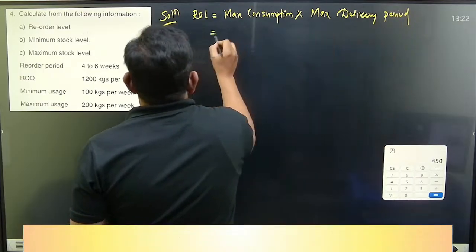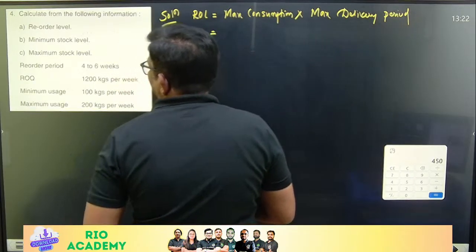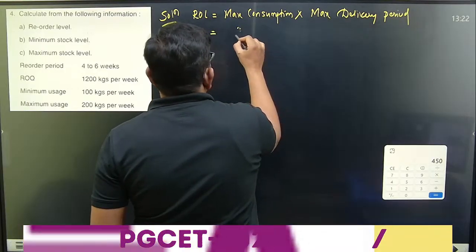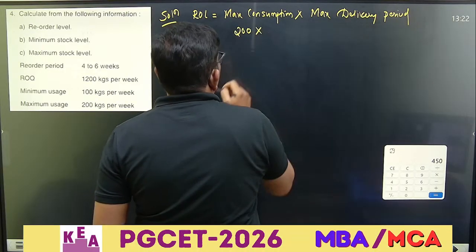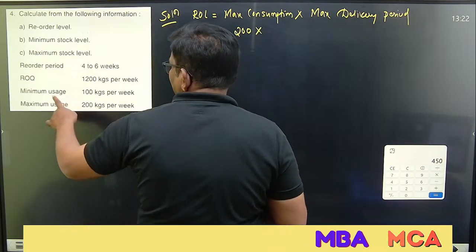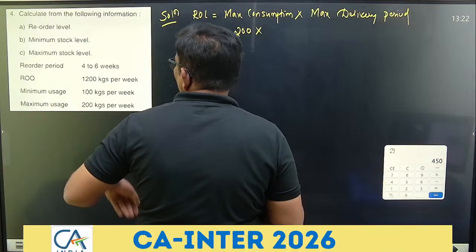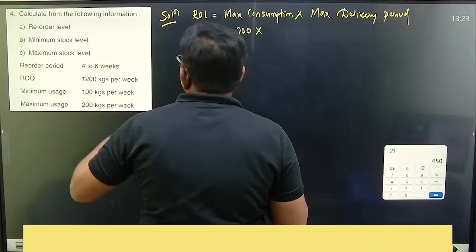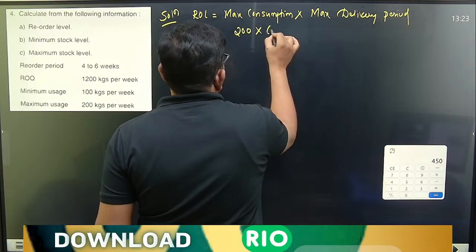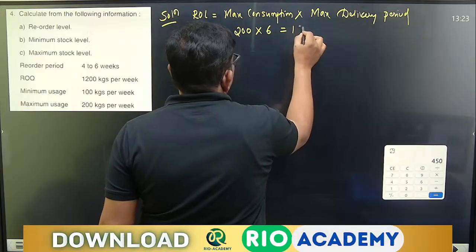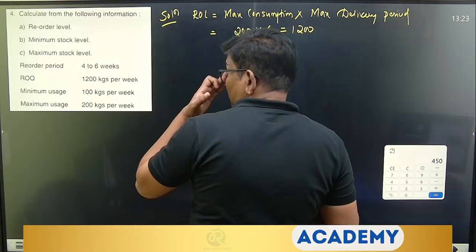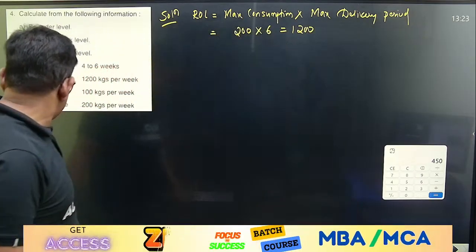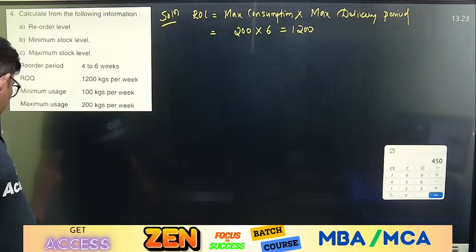Maximum consumption is 200 kg, multiplied by maximum delivery period of 6, giving 1,200. Same result as before.